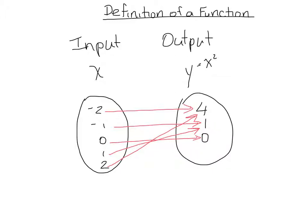It's completely okay for the y values, or output values, to have more than one x value coming to them. You can see how 4 has multiple x values that match it, and how 1 also has multiple x values matching it. That's completely okay, as long as each x value has only one y value that goes with it. For this reason, this is a function.